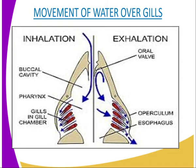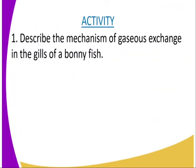As blood and water continue moving in opposite directions within the respiratory surface, oxygen diffuses out of the water into the blood and carbon dioxide from blood into the water. By the time the blood leaves the respiratory surface, it has as much oxygen as the water, because as water moves along, less and less oxygen diffuses out as blood becomes more and more concentrated with oxygen. That is a brief explanation of the mechanism of gaseous exchange in the gills of a bony fish. You can now describe the mechanisms of gaseous exchange in the gills of a bony fish as an activity.